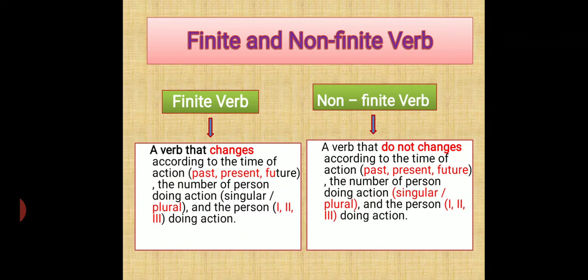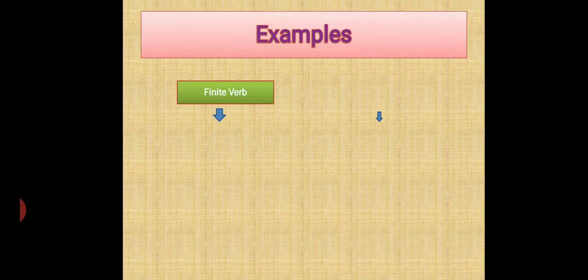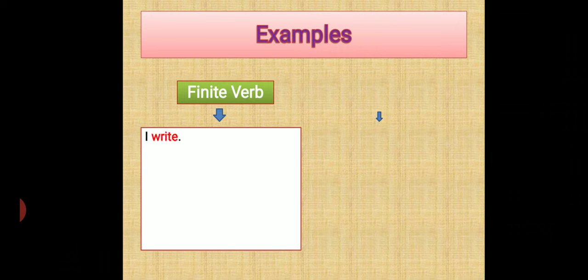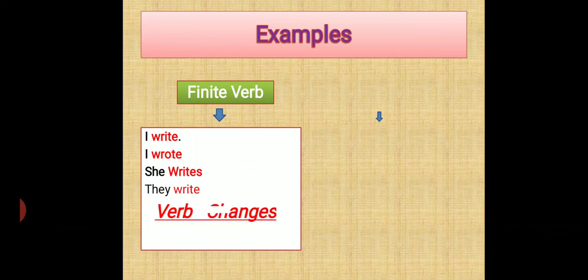Let's see the examples of finite verb. I write. I wrote. She writes. They write. See how the main verb 'write' is changing. I, in simple present tense, is considered plural — so 'I write'. In past tense, 'wrote' — so present and past change. She is singular, so 'writes' — S came at the end of the verb. They is plural, so 'write' — S is omitted. So this verb 'write' changes according to time, according to person, according to number. We can say finite verb changes.